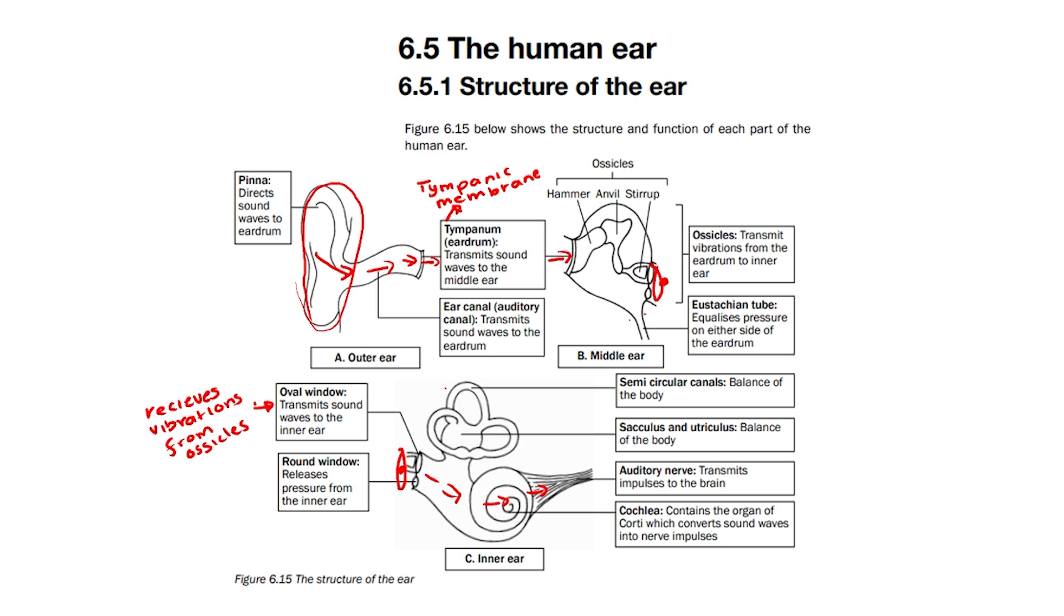There is also a structure of the ear known as the semicircular canals. The semicircular canals contain receptors called cristae that aid in balance of the body.